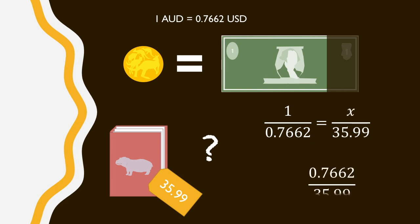Or, 1 on x, the ratio of Australian dollars to how much the actual cost is, is equal to the 0.7662 US dollars to the $35.99. In fact, if there's any kind of ratio relationship going on, we can set up this kind of equation and solve.